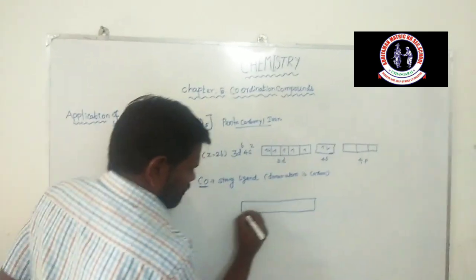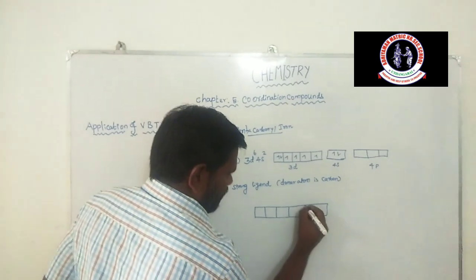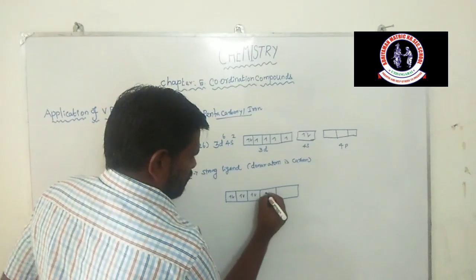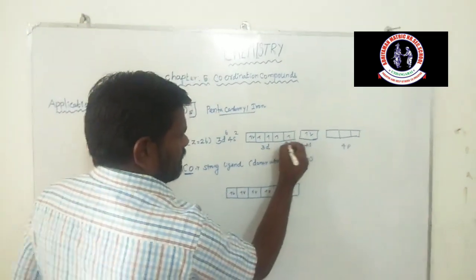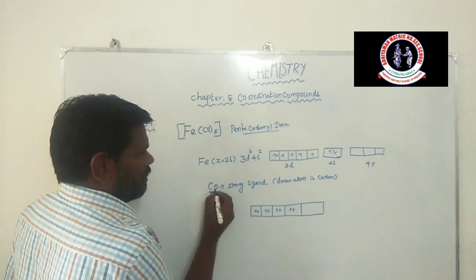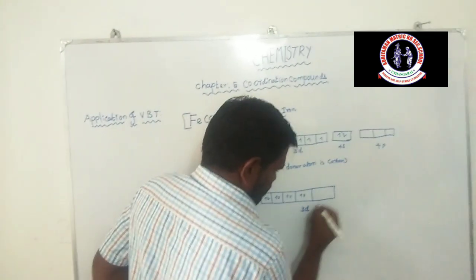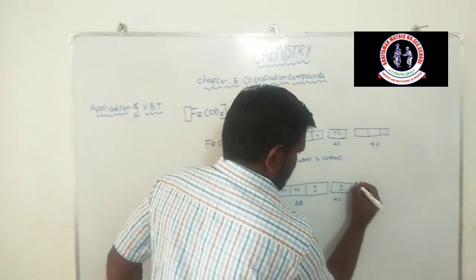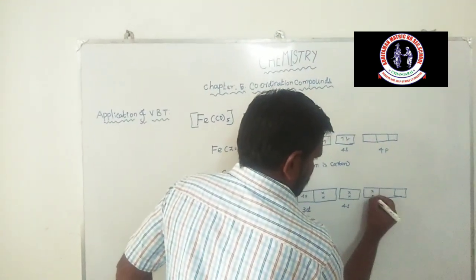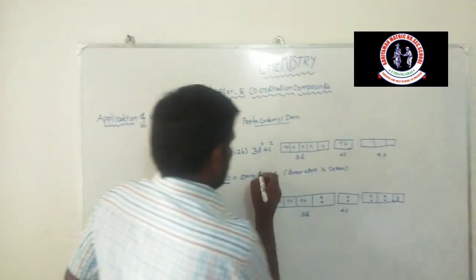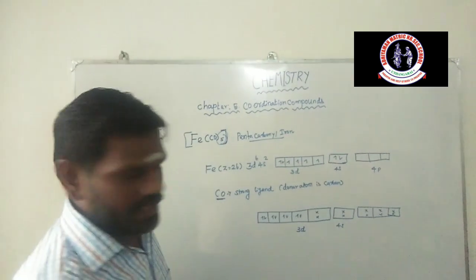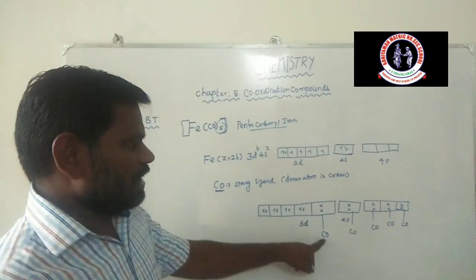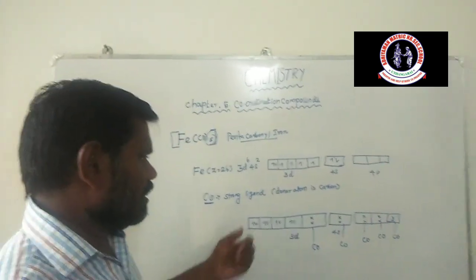So here we will change the 3d orbitals — 2 electrons come together, giving totally 8 electrons: 2, 4, 6, 8. The carbonyl ligands enter the 3d and 4s orbitals. There are 5 carbonyl groups: 1st, 2nd, 3rd, 4th, and 5th — all 5 carbonyl ligands enter the central metal atom.